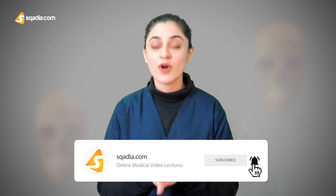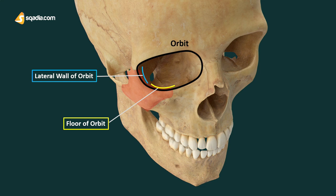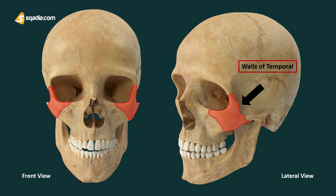A very important thing to remember is that our zygomatic bone helps in the formation of two major things. As we know, this is the orbit. The two things are the floor and lateral wall of the orbit. The others are the walls of the temporal and infraorbital fossa.